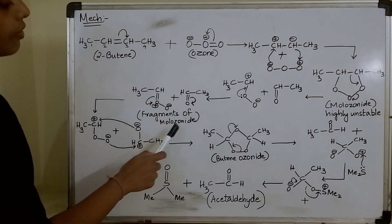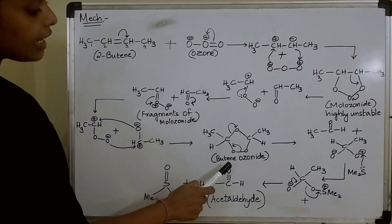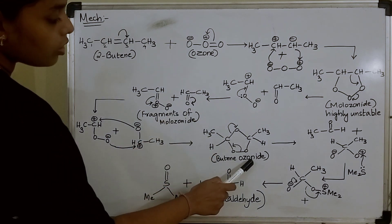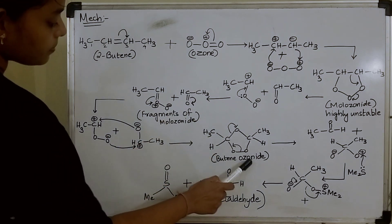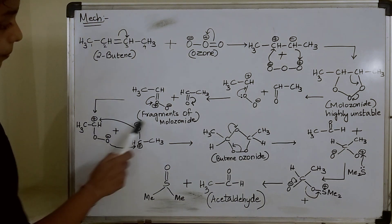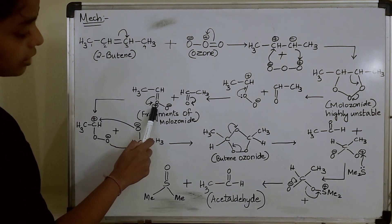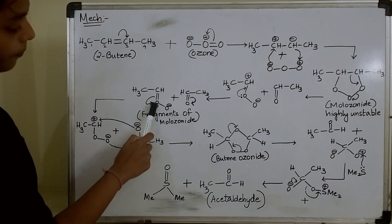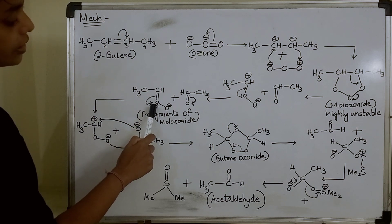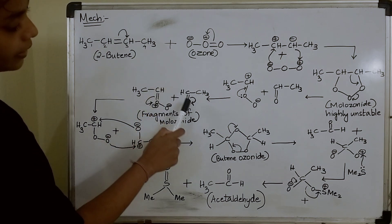These fragments will again undergo cyclization giving butene ozonide. In this structure, as oxygen is having a positive charge, the double bond is shifted here, leaving this carbon positively charged.